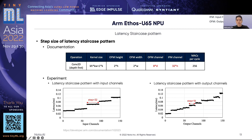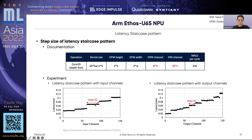Next, to figure out the step size of the latency staircase pattern, we looked up the documentation and measured the step size by experimentation. According to the documentation, the convolution performance depends on the dimension of the tensors being processed. The processing unit for input feature map and output feature map in the channel direction is 32 and 8 respectively. We measured how latency on Ethos U65 varies according to input and output channels on the convolution layer. The latencies had the staircase pattern and the step size was 32 for input channels and 16 for output channels. Therefore, it is important to consider the step size of the latency staircase pattern to design efficient neural networks on Ethos U65.